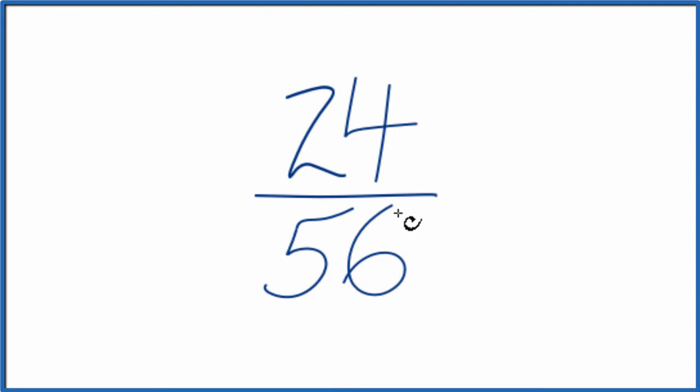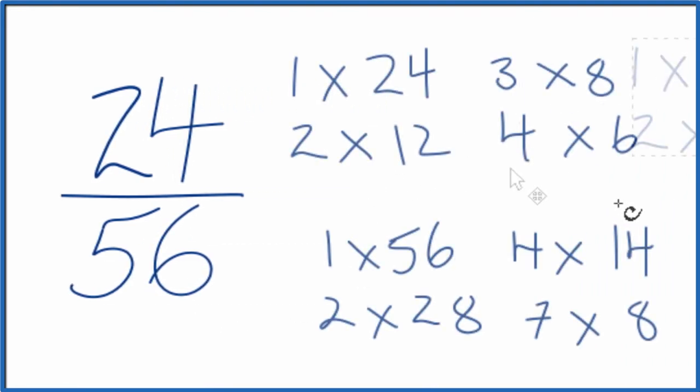So let's look at the factors for 24 and 56. So these are the factors for 24 and for 56, and I'm looking for the greatest common factor, and it looks like 8 is going to be the greatest common factor for 24 and 56.